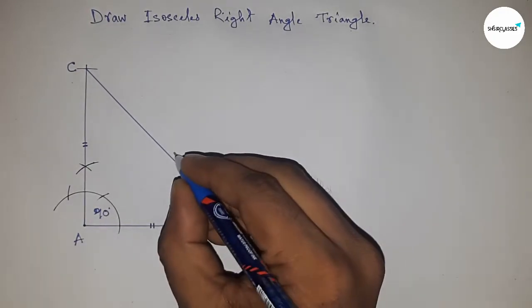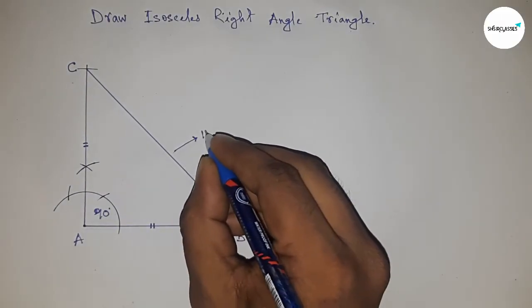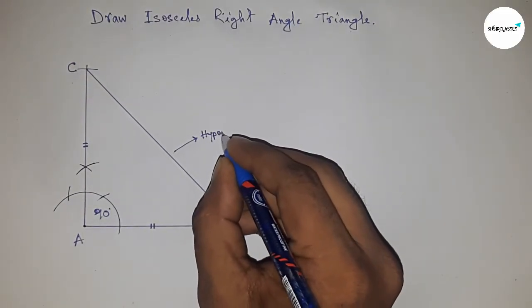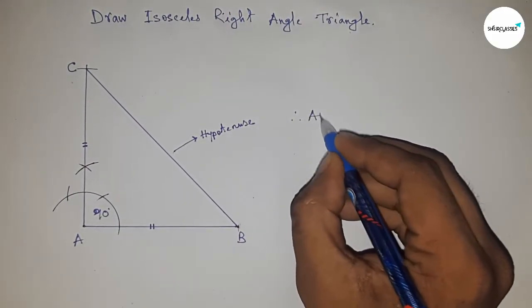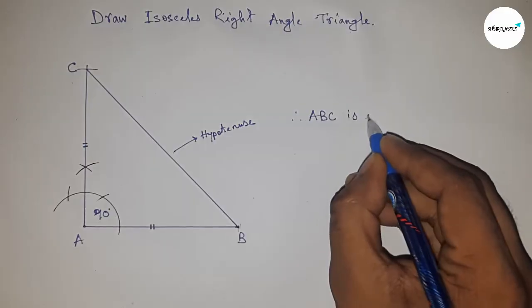And this is the hypotenuse of the isosceles right angle triangle. So therefore ABC is an isosceles right angle triangle.